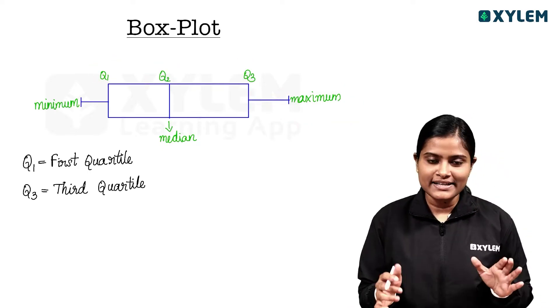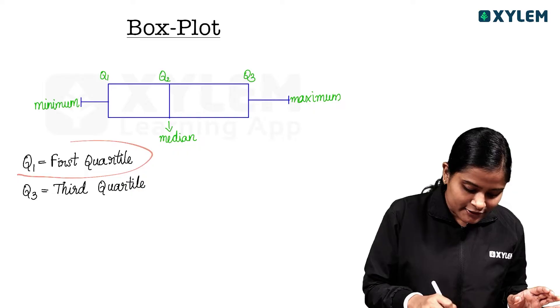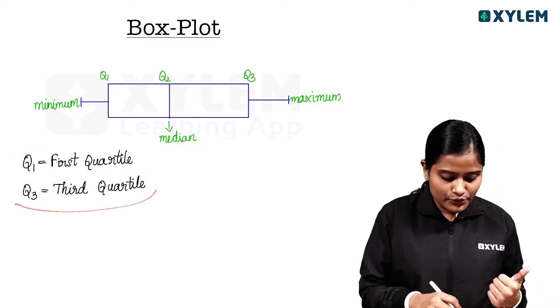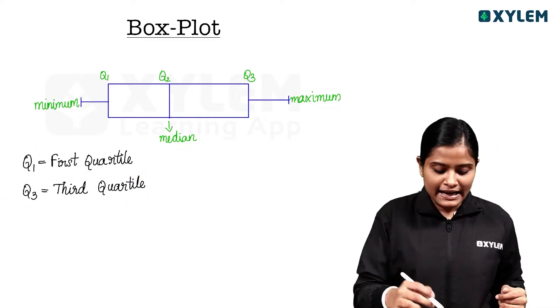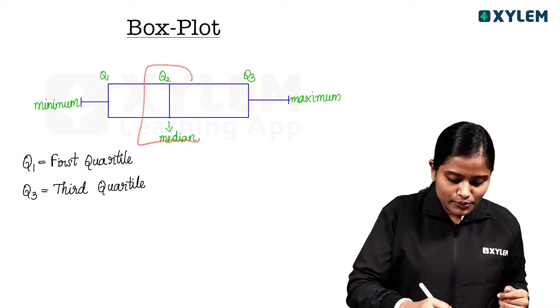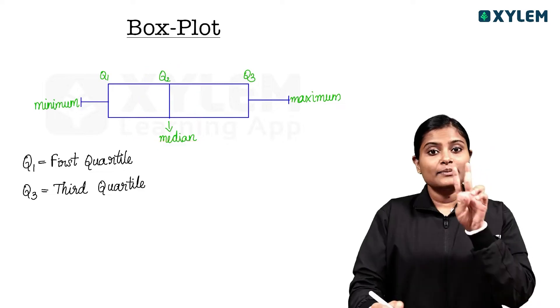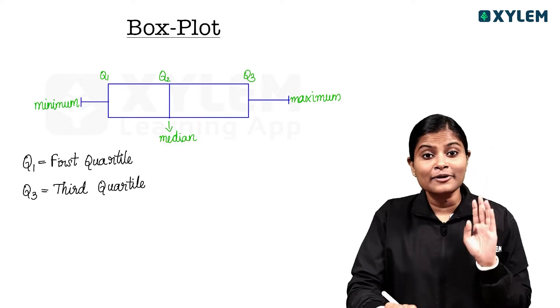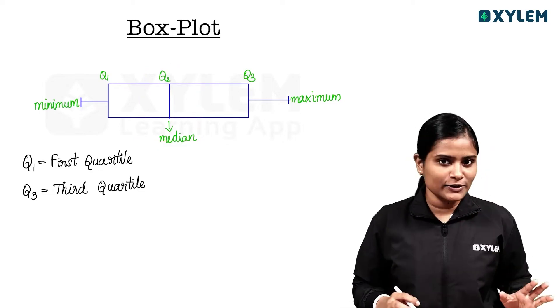Q1 is the first quartile, Q3 is the third quartile, and Q2 is the second quartile. Other than these, we are getting to know about the median value.